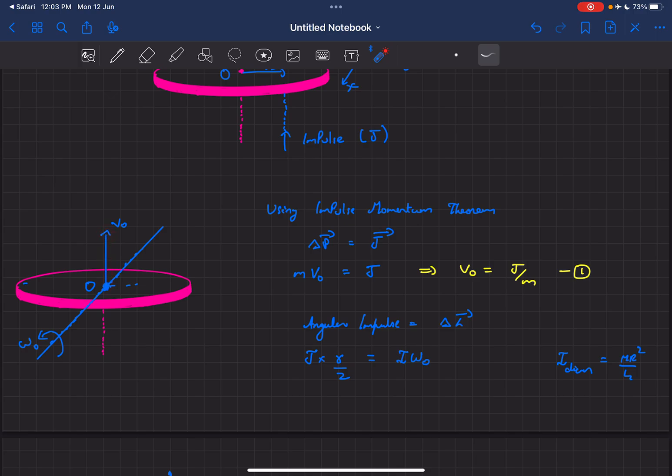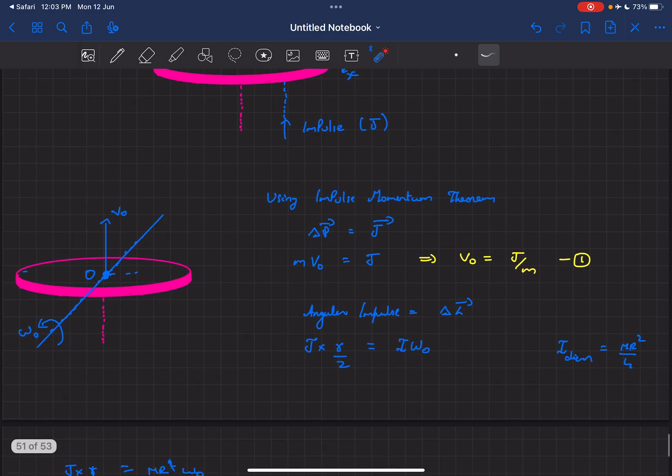From that we'll get our first equation for v₀. Now the second fact that we'll be using is the angular impulse imparted would be equal to the change in angular momentum of the body.